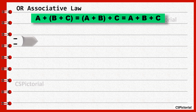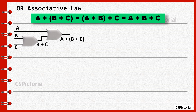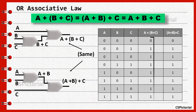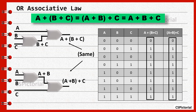OR associative law. The inputs B and C are ORed and then the output B plus C is ORed with A; the output is A plus B plus C. In the next case, the inputs A and B are first ORed and then the output A plus B is ORed with C; the output is A plus B plus C. The truth table shows that the output values are the same for both cases.